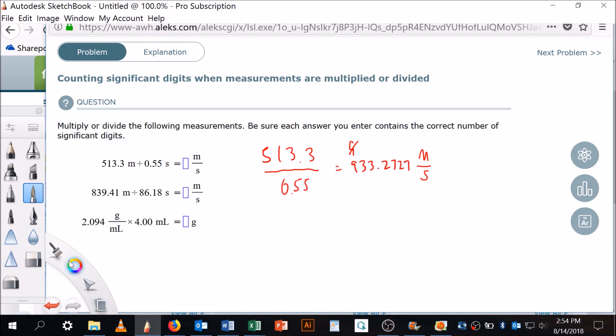Okay, now this number on top has four significant digits and this number below has only two. So since it's a division or multiplication problem, it's only allowed to have two sig figs. It's the least of the two. So this then is going to be equal to 930 meters per second.